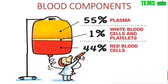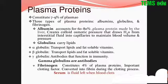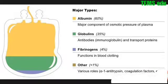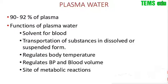Plasma proteins constitute seven to nine percent of the plasma. Three types of plasma proteins are albumin, globulin, and fibrinogen. Albumin is about 60 percent, globulin is 35 percent — its antibodies, immunoglobulins, and transfer proteins. Fibrinogen is four percent, its main function is blood clotting. Less than one percent includes alpha-antitrypsin, coagulation factors, etc.